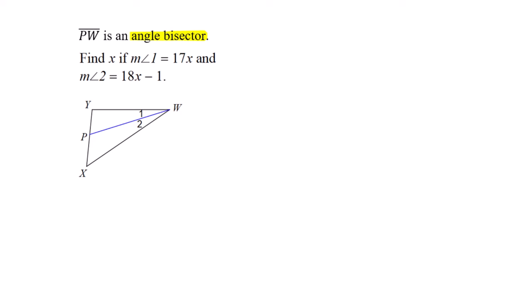PW is an angle bisector. Angle bisectors split angles exactly in half, creating two equal smaller angles. Find x if angle 1 is 17x and angle 2 is 18x minus 1. These must be equal, so 17x equals 18x minus 1. Subtract 18x, negative x equals negative 1, so x equals 1.